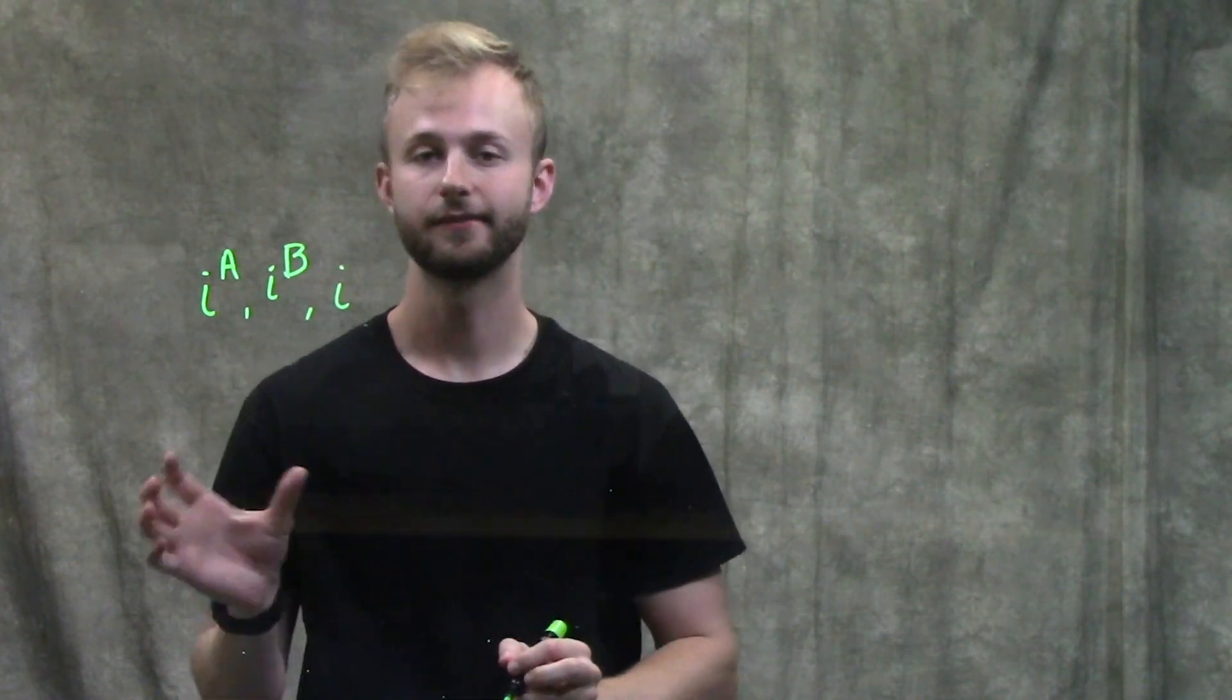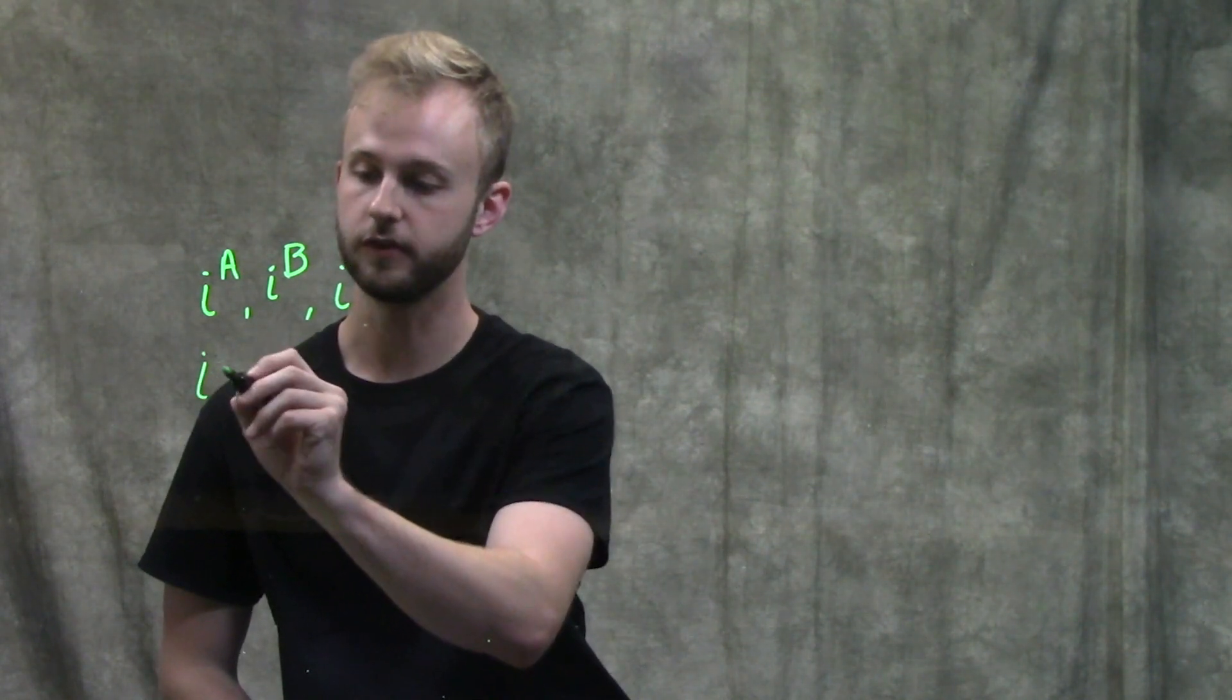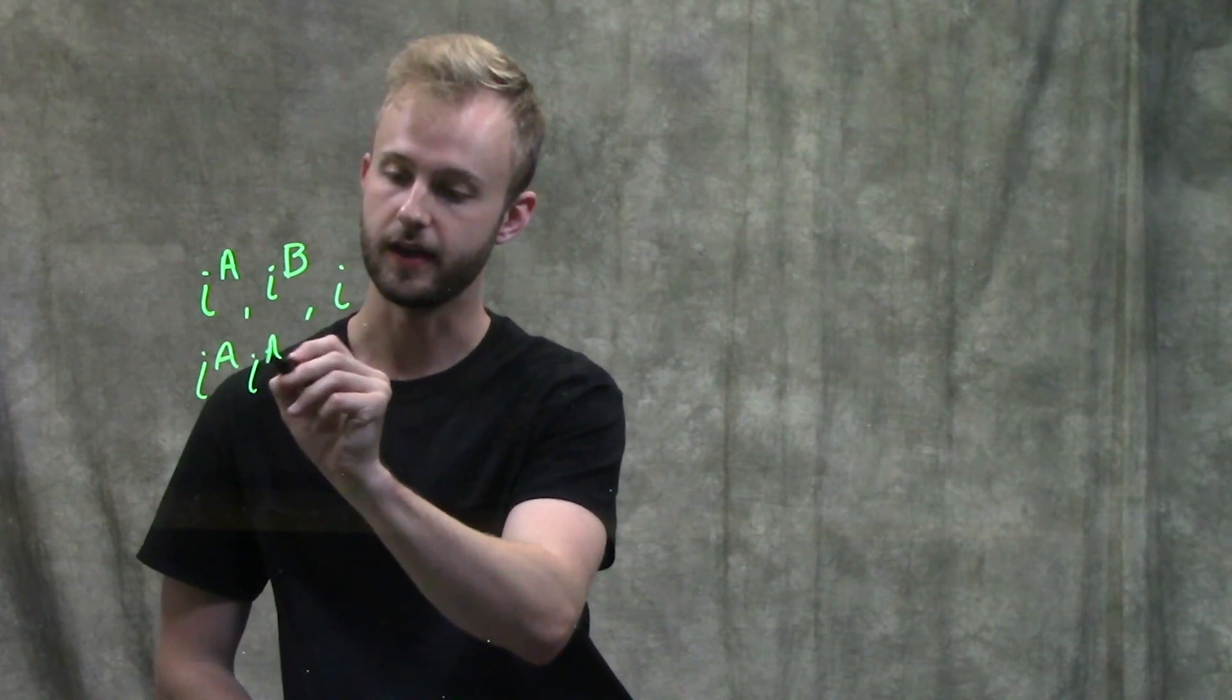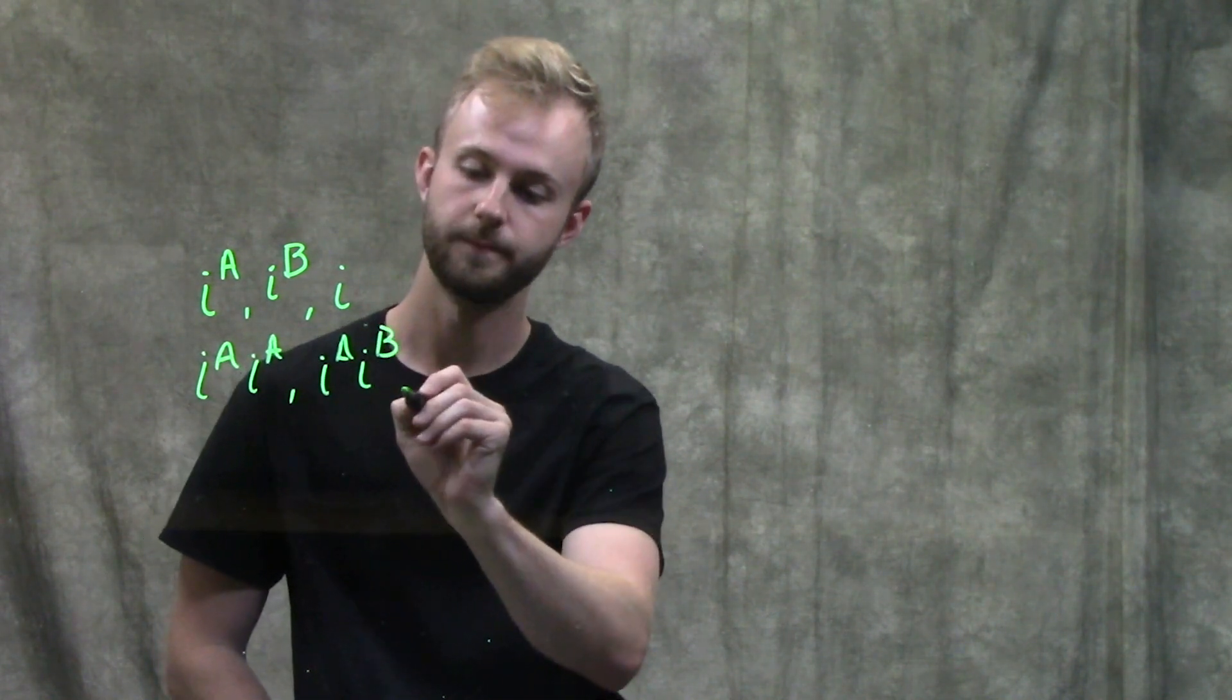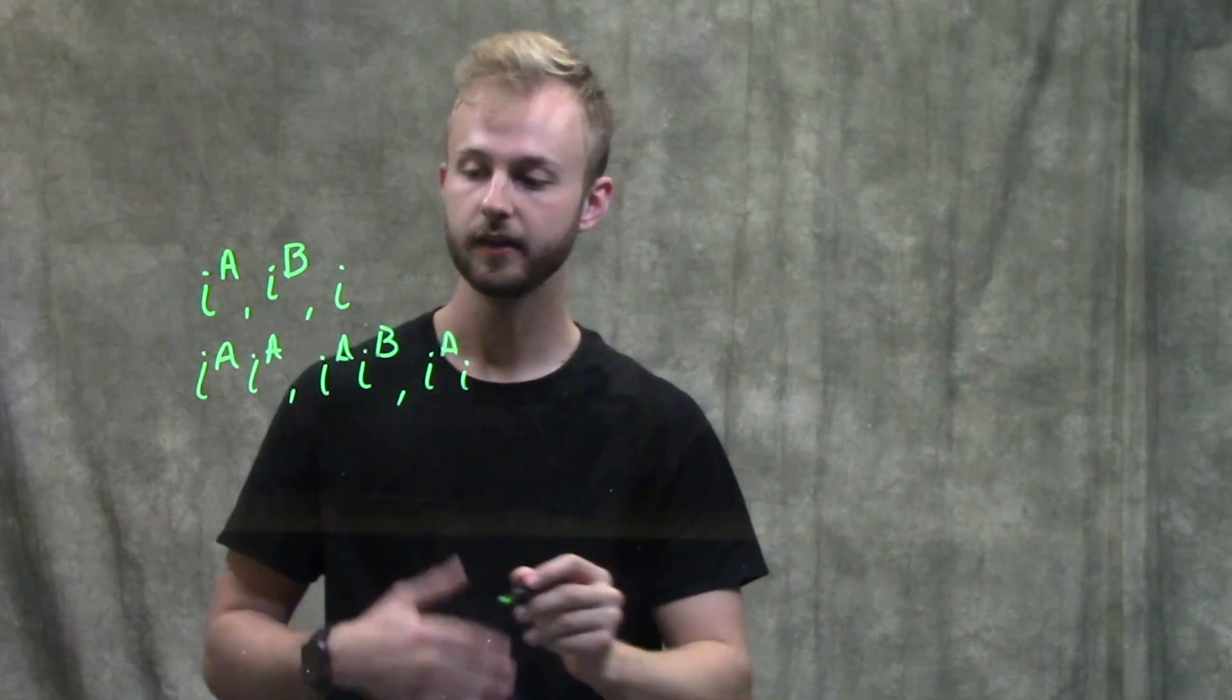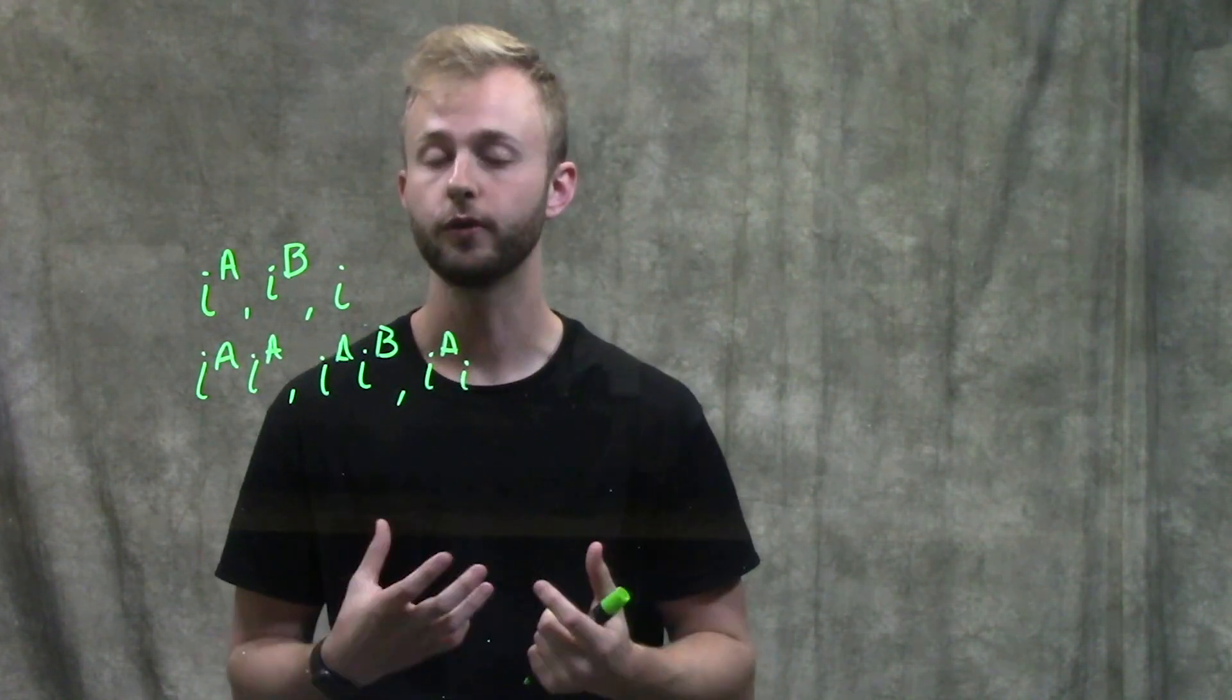And so these can combine in a lot of different ways to give us a lot of different blood types. So for example, just to do a few, we have Ia Ia, Ia Ib, Ia and just an I, and so on and so forth. So it can get pretty complicated pretty quickly.